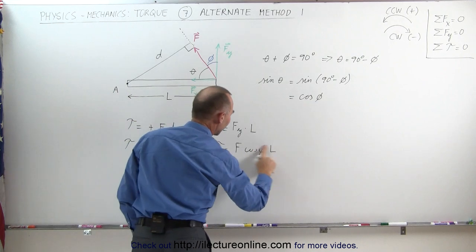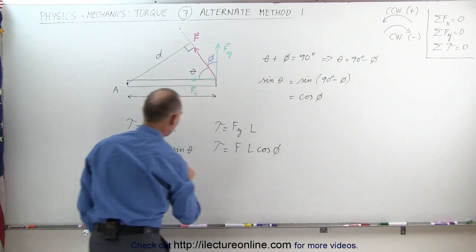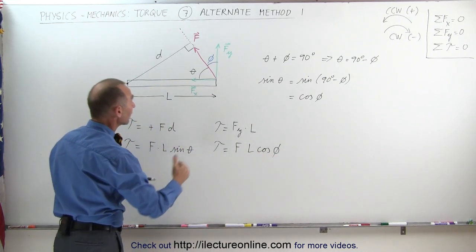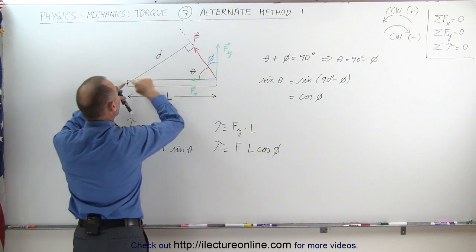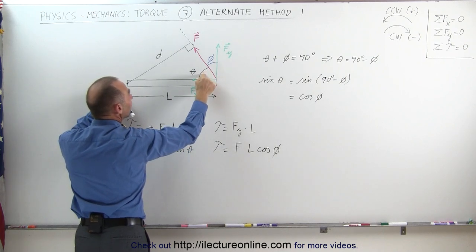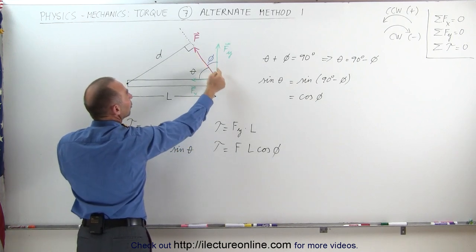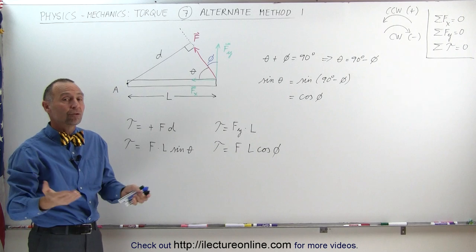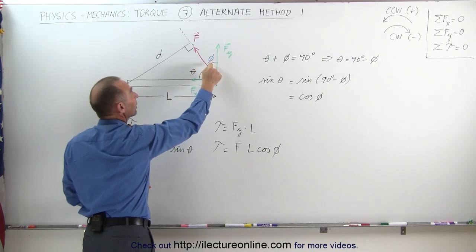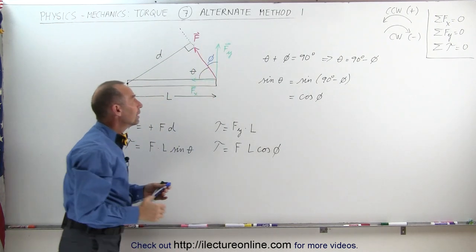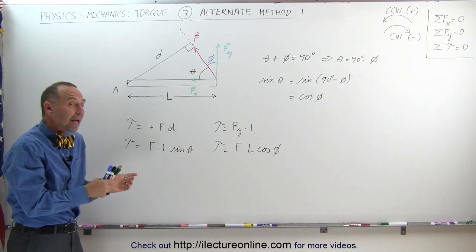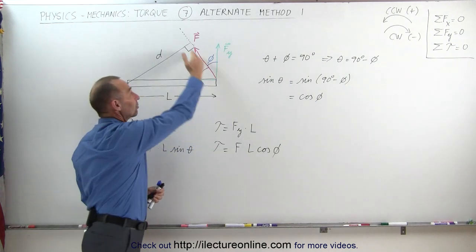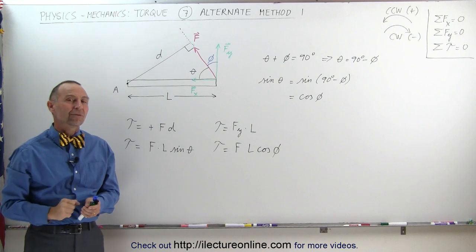So either we write the torque as force times L times the sine of theta, or the torque equals force times L times the cosine of phi — they are equal. Either you take the force and multiply it times the perpendicular distance D, which equals the length of the beam times the sine of this angle, or you write it as the force times the length of the beam times the cosine of this angle. In either case you get the same torque. If there are multiple forces, you can take each force and multiply it by the cosine of the angle between the direction of the force and the vertical to the beam. Sometimes it's easier to use this method rather than finding the perpendicular distance. So let's keep that in mind — I'll show you more examples in a couple more videos to come.